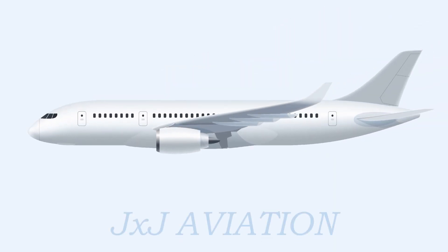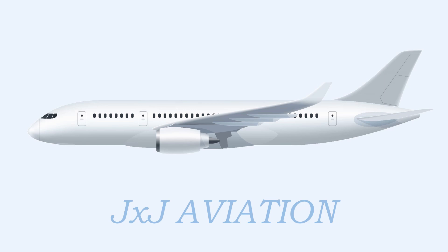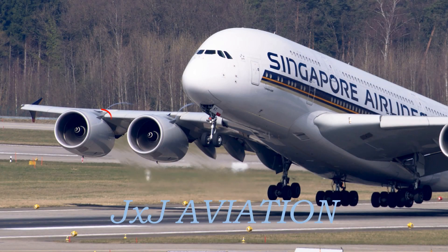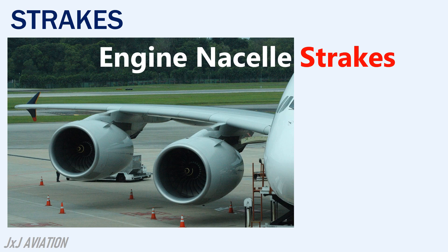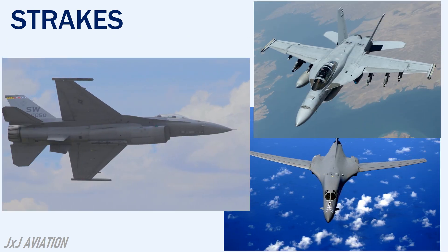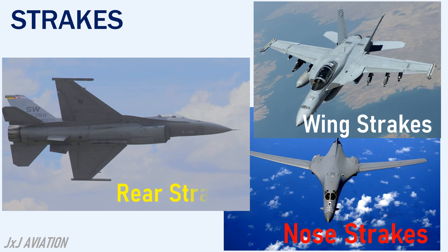Hello and welcome to GXJ Aviation. In this video we will be looking at the small blade-like structures attached to the engines or the fuselage. On an aircraft these blade-like structures are called strakes. If they are installed on the engine they are called engine nacelle strakes. On the fuselage there may be nose strakes, wing strakes, or rear strakes. Let's see what strakes are and why they are installed on an aircraft.